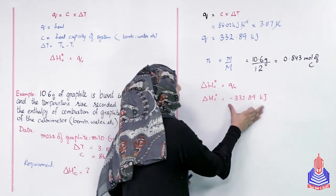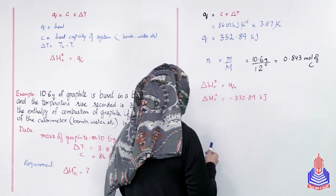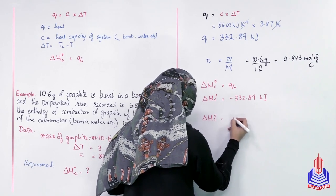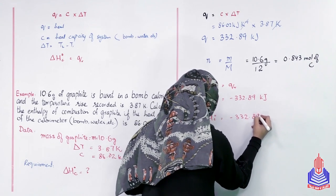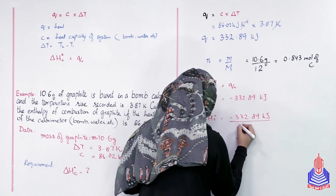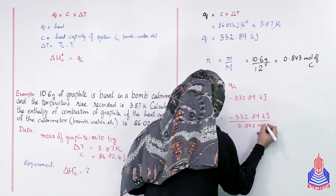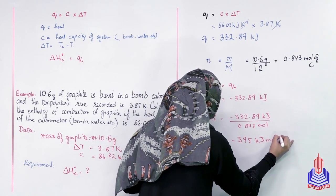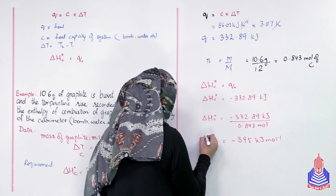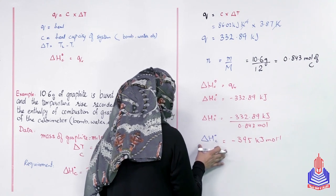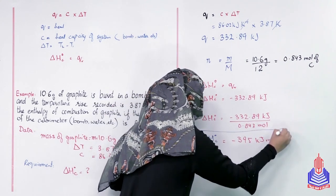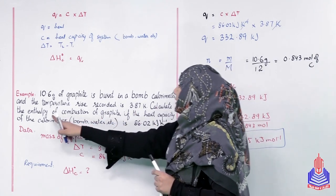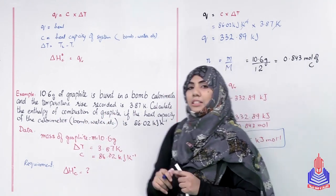अब हم enthalpy of combustion for 1 mole of graphite calculate करना चाहते हैं। इस amount को हम divide कर देंगे number of moles से: ΔHc° = -332.89 kJ / 0.843 mol। Final value आएगी that is minus 395 kilojoule per mole। 1 mole of graphite when combusted - enthalpy change की value -395 kJ/mol है। That was the demand of our example - calculate the enthalpy of combustion of graphite।